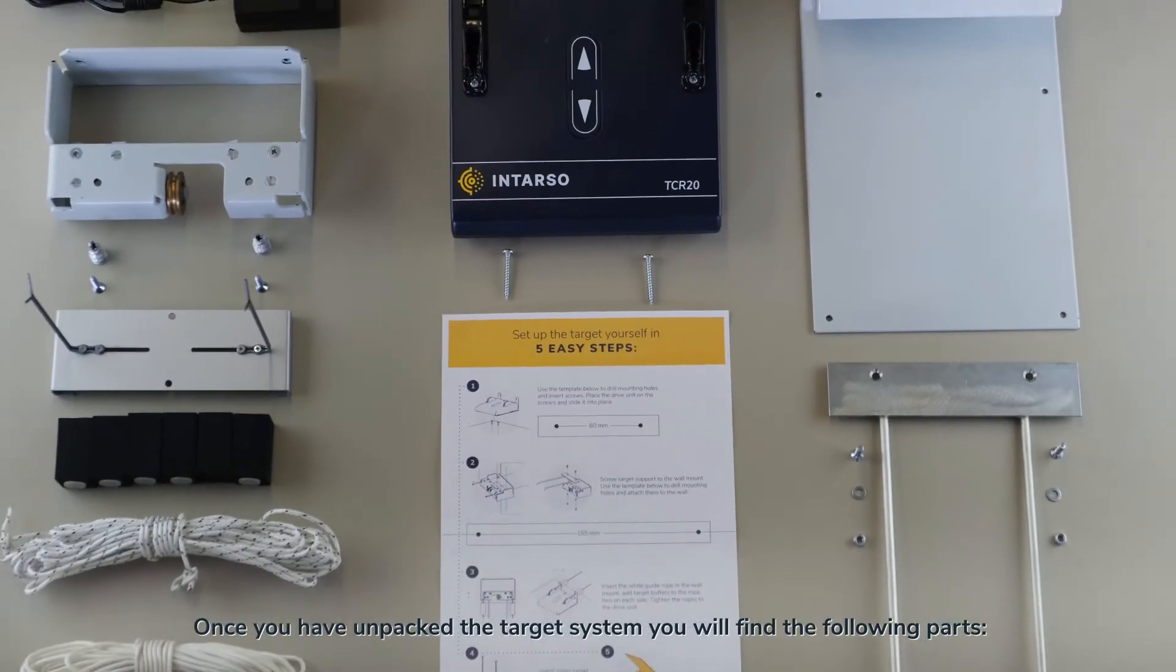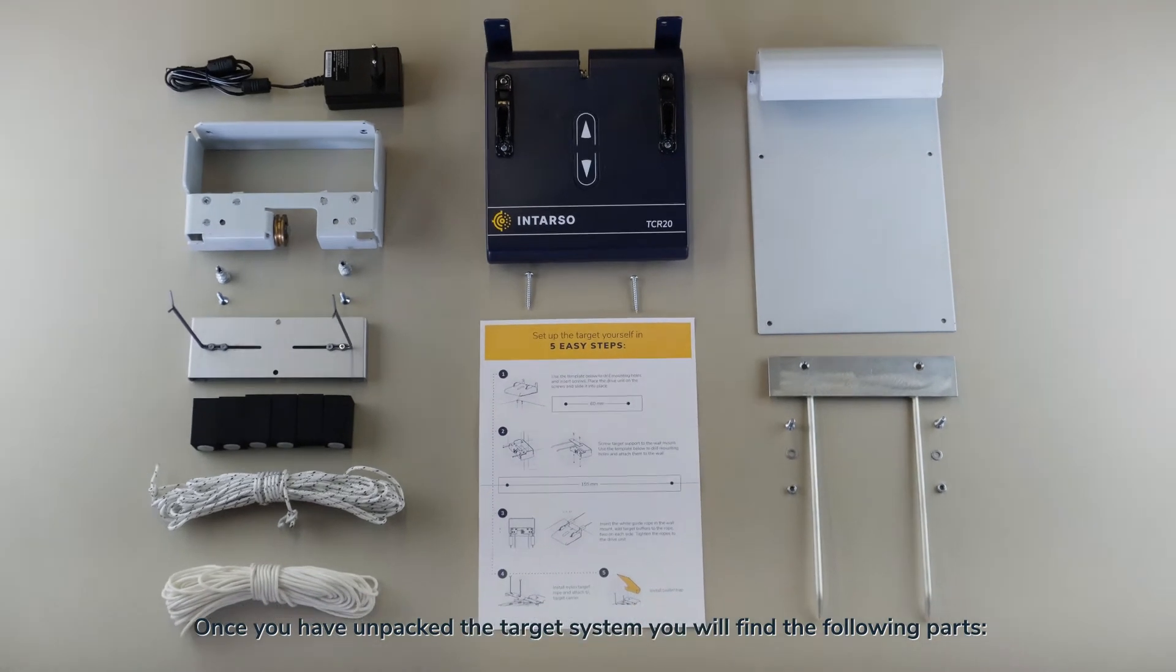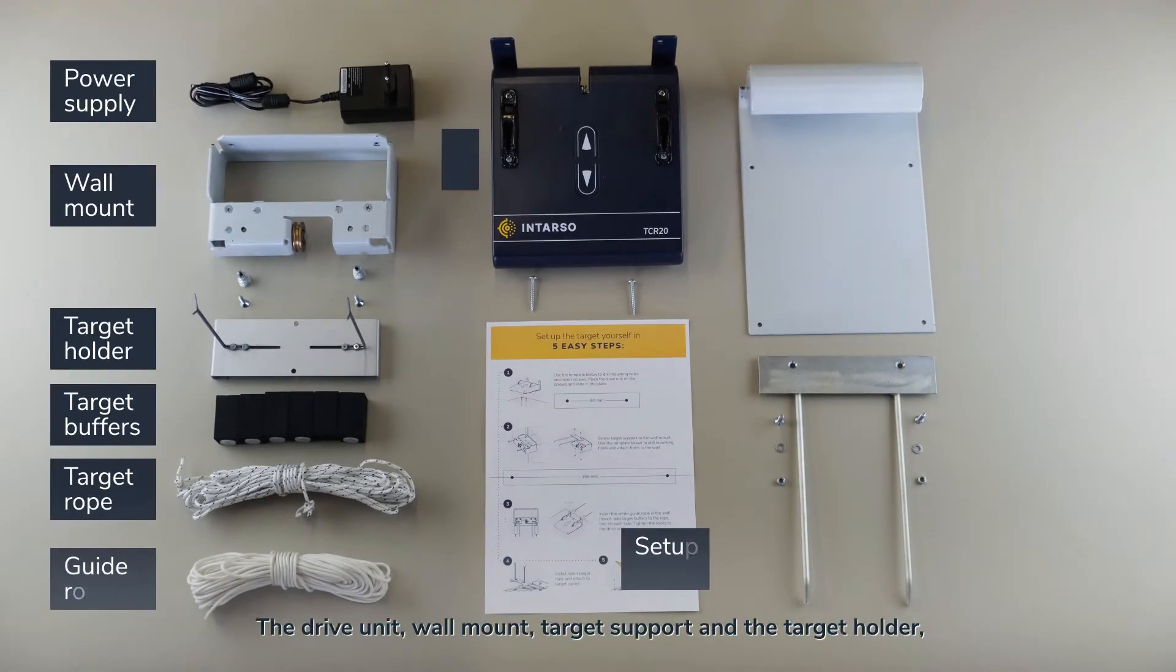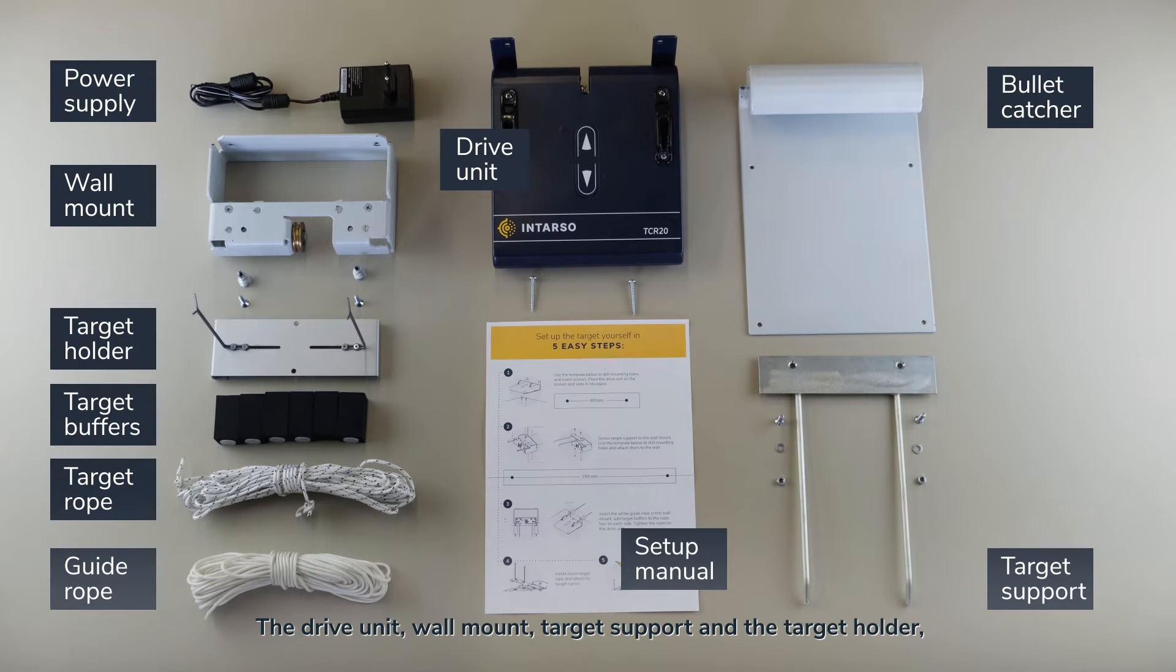Once you have unpacked the target system, you will find the following parts: the drive unit, wall mount, target support and target holder, guide ropes, target ropes and target buffers, bullet trap, power supply, and the setup guide that you can also use as a template for precise drilling.